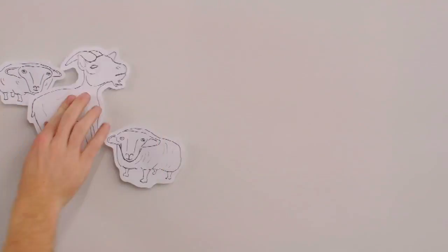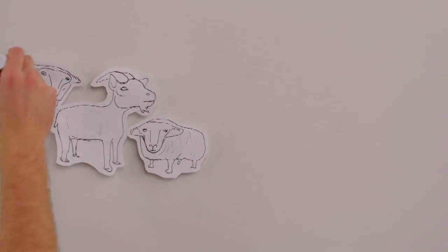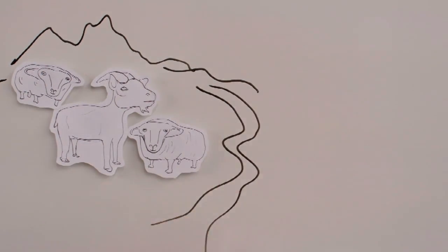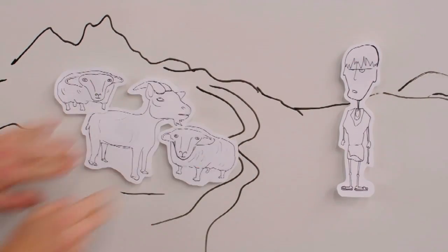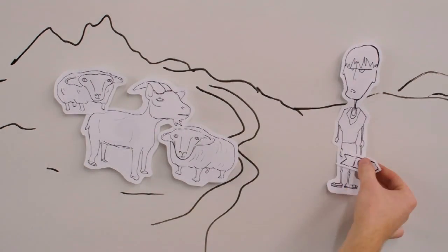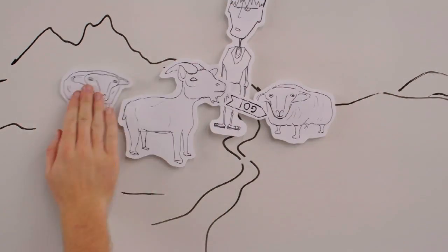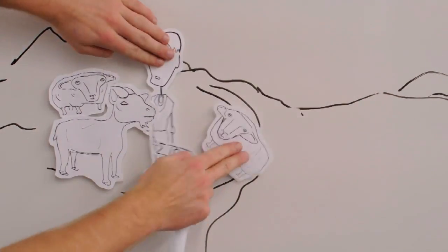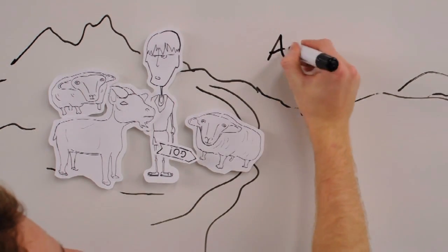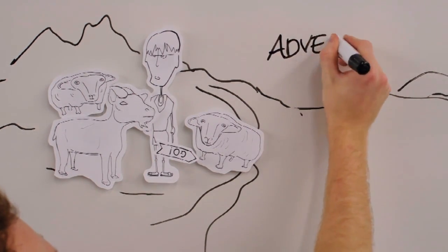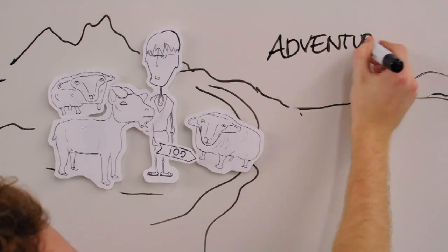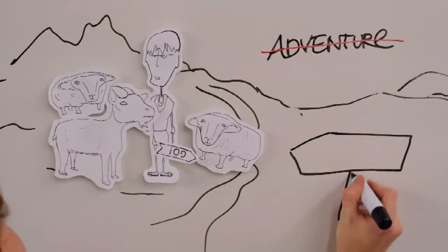Sheep and goats have no natural migrations. When man domesticated them, he took on the responsibility of nature. The nomad must lead the helpless herd. It's a heroic adventure and yet the Bakhtiari are not so much heroic as stoic, resigned because the adventure leads nowhere.